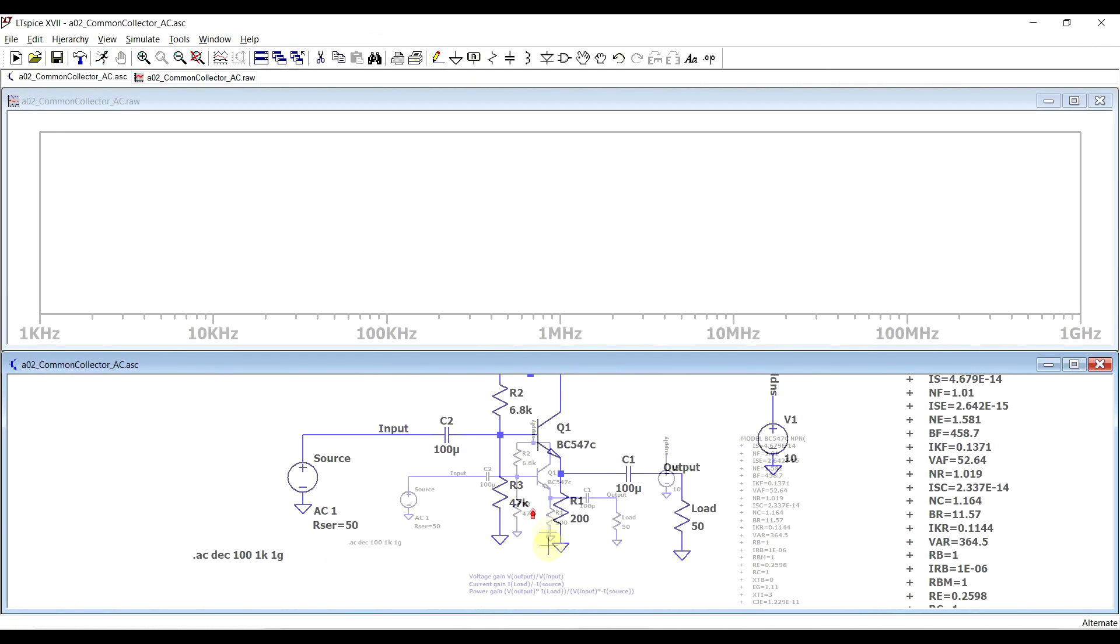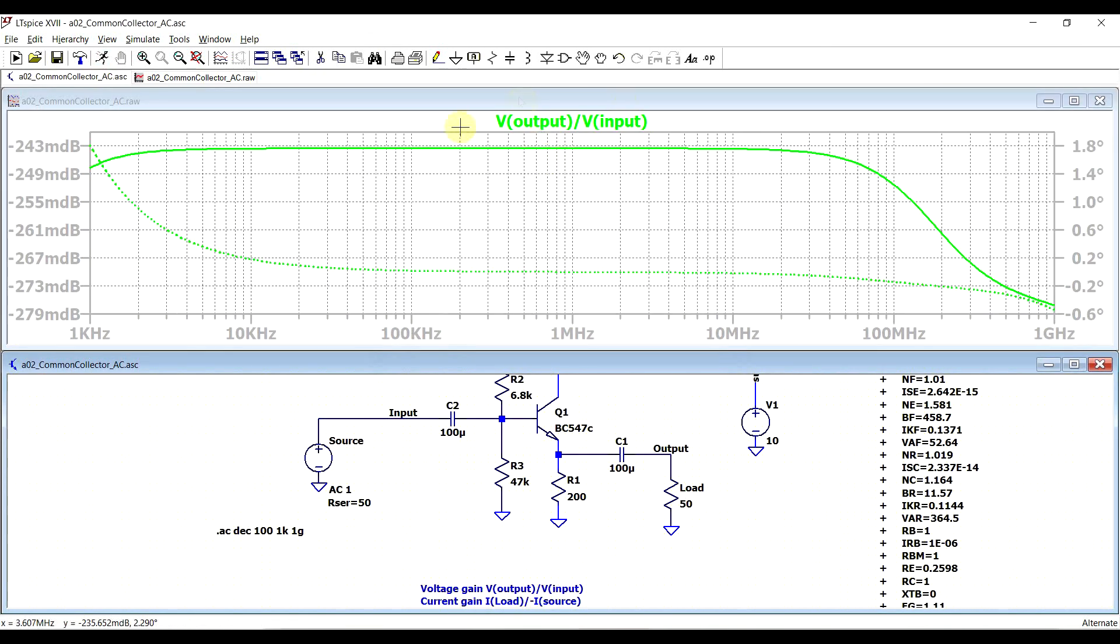If we run the simulation and we plot out the ratio between output and input voltage, we can see that this is more or less one, so minus 200 millidecibels, regardless of input frequency.